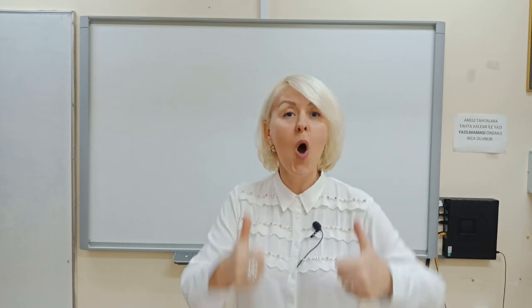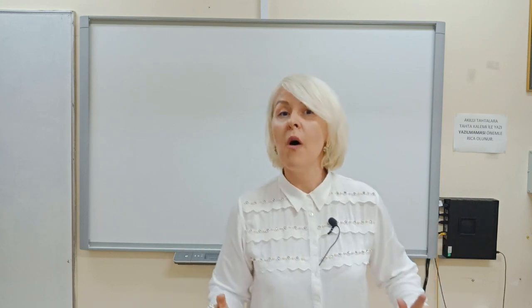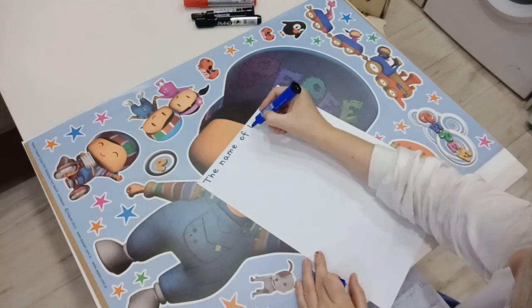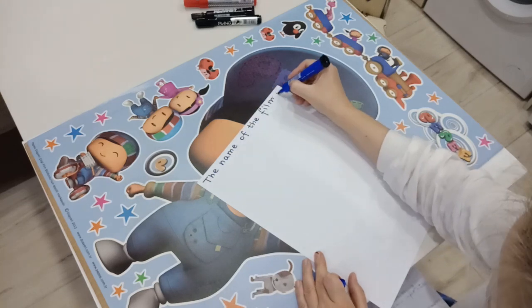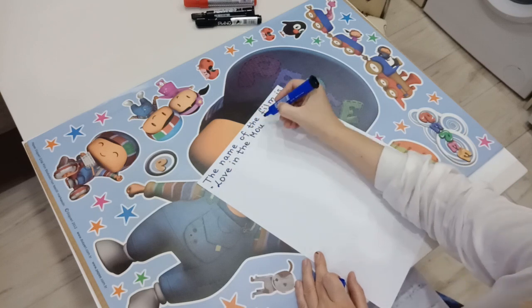Now tell your students that today you are going to write the storylines for the new blockbusters. Give every student an A4 piece of paper. Ask them to write down full answers to your questions and warn them not to show their answers to their friends. Now ask your students the first question: what's the name of the film? Give them 30 seconds to write down their answer at the top of the piece of paper.